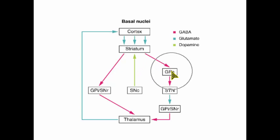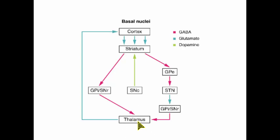Other parts: globus pallidus externa — that's what GPE stands for. STN stands for subthalamic nucleus. And then we've got globus pallidus interna and substantia nigra reticularis. Lastly, down here we have the thalamus. The thalamus has a few different functions — one of them is a relay station for sensory information going up to the cortex. But also there are fibers coming from the thalamus going up towards the motor cortex and stimulating it.